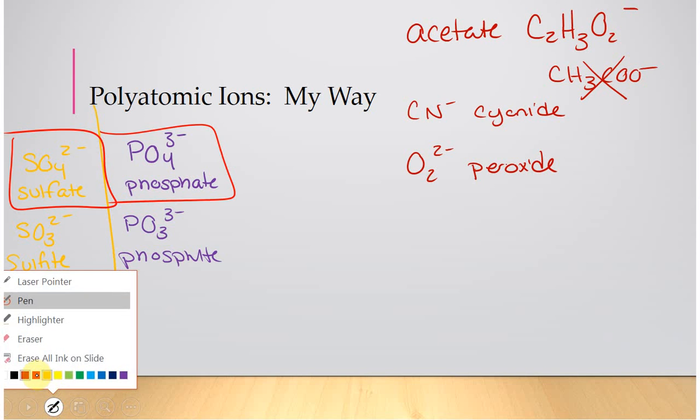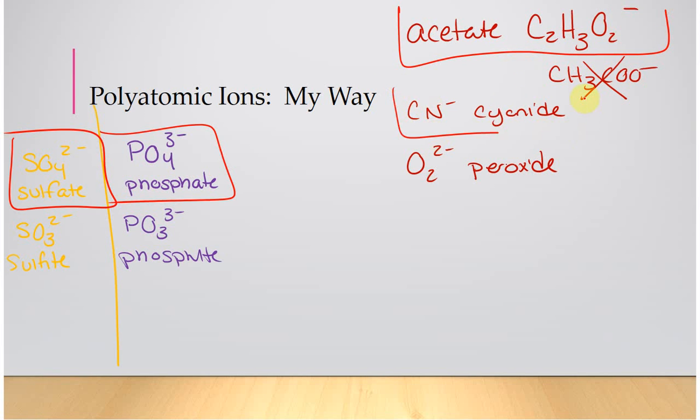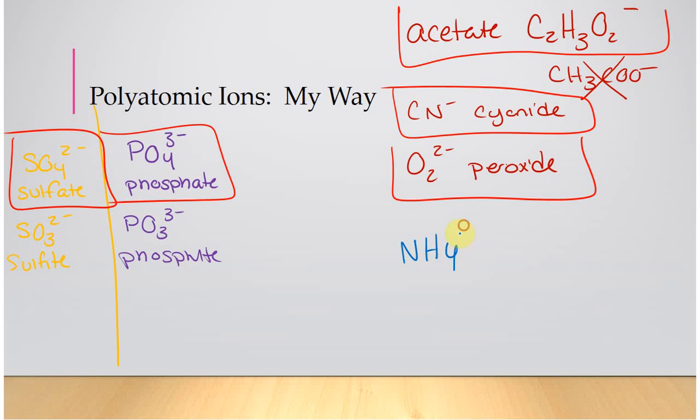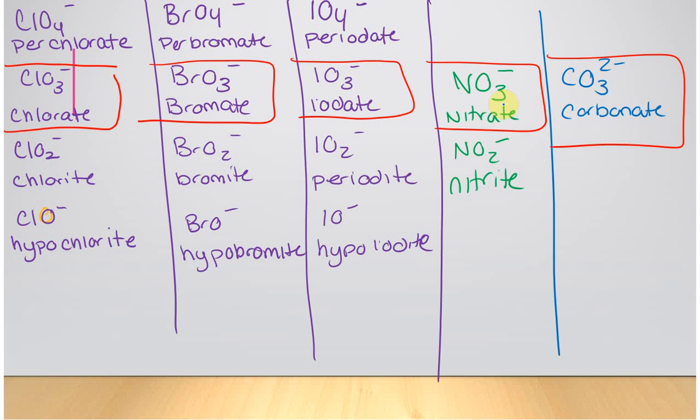We also need, I'm going to go ahead and box these. It's the only cation, and that is ammonium. NH4 with a positive charge is ammonium. So, if we look, counting them up, that's 11 total.